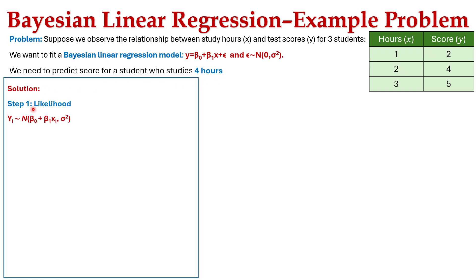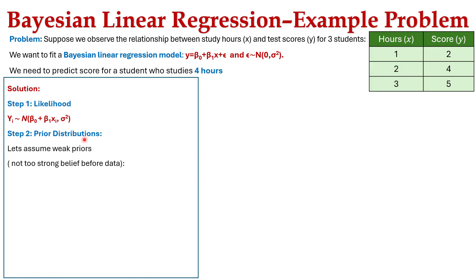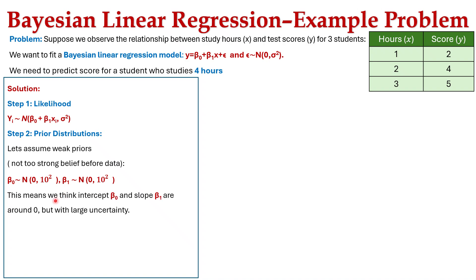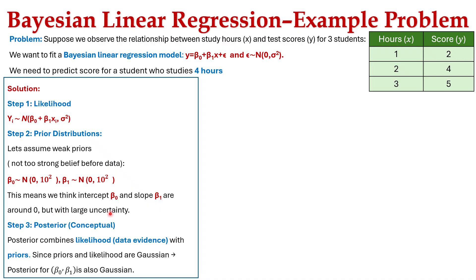Step 1 is finding the likelihood: yᵢ ~ N(β₀ + β₁xᵢ, σ²). Step 2 is the prior distribution — we assume vague priors, not too strong beliefs before the data: β₀ ~ N(0, 10²) and β₁ ~ N(0, 10²). This means we think the intercept β₀ and slope β₁ are around 0, but with large uncertainty. Step 3 is the posterior, which is conceptual — the posterior combines the likelihood (data evidence) with the prior. Since both prior and likelihood are Gaussian, the posterior for β₀ and β₁ is also Gaussian.